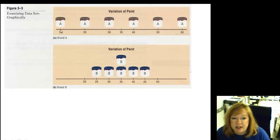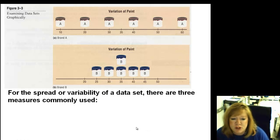So if you look here, here's brand A. Look how you have such differences as to how long the paint could last. It could last 60 months or it could only last 10. So five years as opposed to less than a year is quite a variation. If you look at brand B though, they're all clustered around the mean. And so that's what the standard deviation tests for, to see how close your data is around that mean. So for the spread of variability of a data set, there are three common measures used: range, variance, and standard deviation.